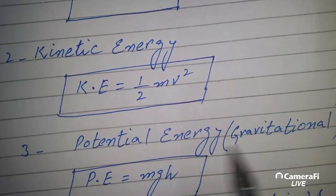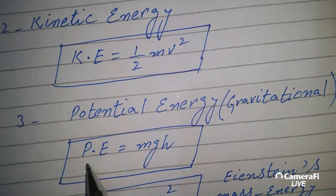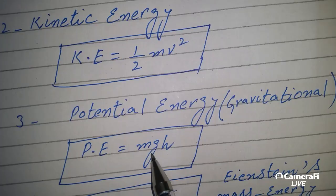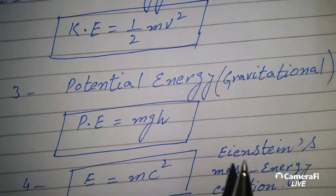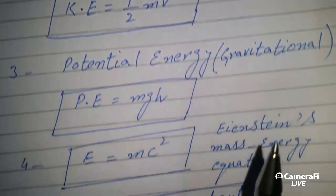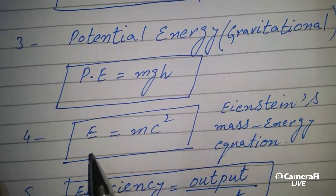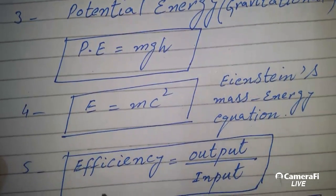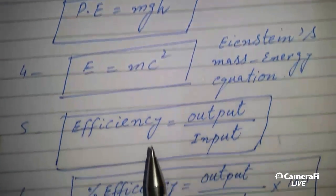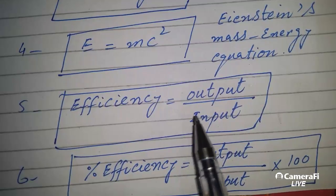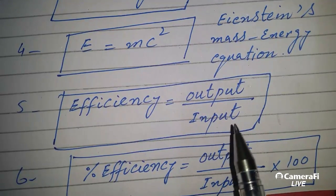Number 3: we have the formula for gravitational potential energy — PE equals mgh. After that we have Einstein's mass-energy equation: E equals mc squared. Then we have the efficiency formula: Efficiency equals output power divided by input power.